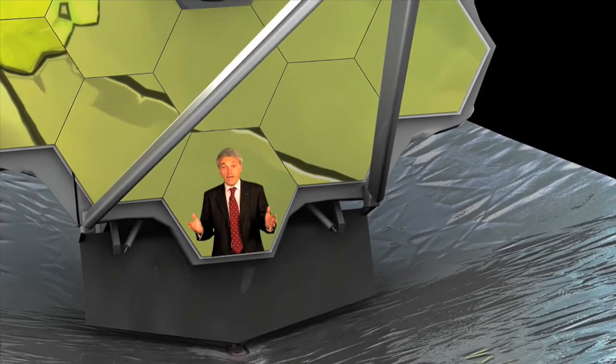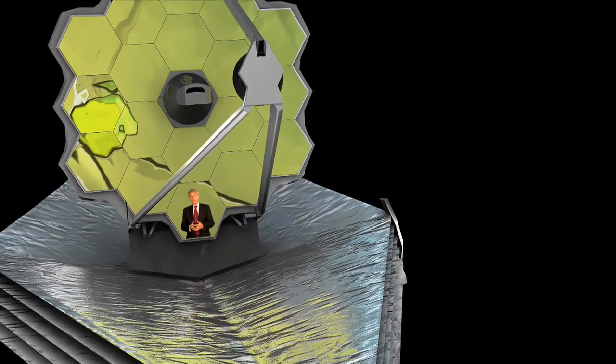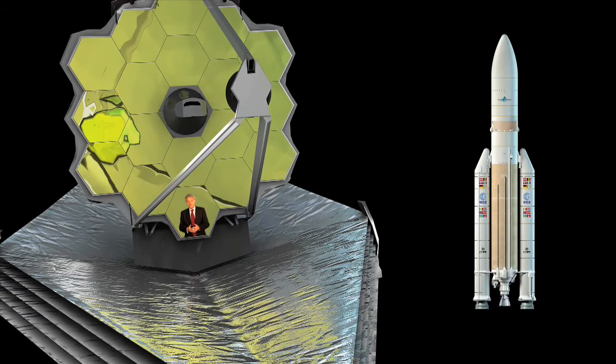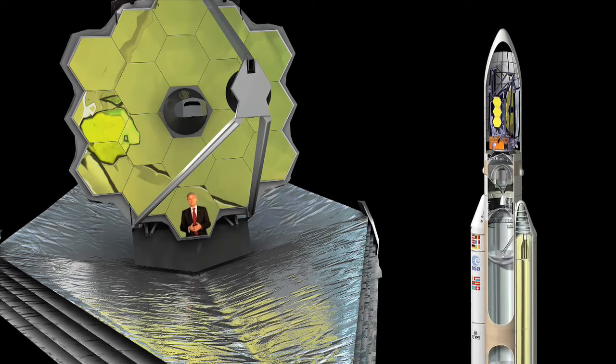When it's launched, the James Webb Space Telescope will be the largest space telescope ever flown, with a primary mirror that is six and a half meters in diameter. In fact, this space telescope mirror is the first to have a diameter that is larger than that of the launcher fairing, and it will have to be folded to fit into the ESA Ariane 5 ECA launcher.